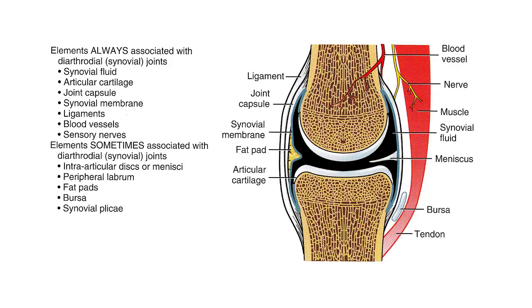Then we have synovial joints, which are what we are primarily interested in for this class. The bones in contact are covered by articular cartilage. Synovial joints have a joint cavity covered by a joint capsule. The cavity is filled with synovial fluid, secreted by the synovial membrane — the deep lining of the capsule. The bones are connected by ligaments, which can be intracapsular, extracapsular, or capsular ligaments.